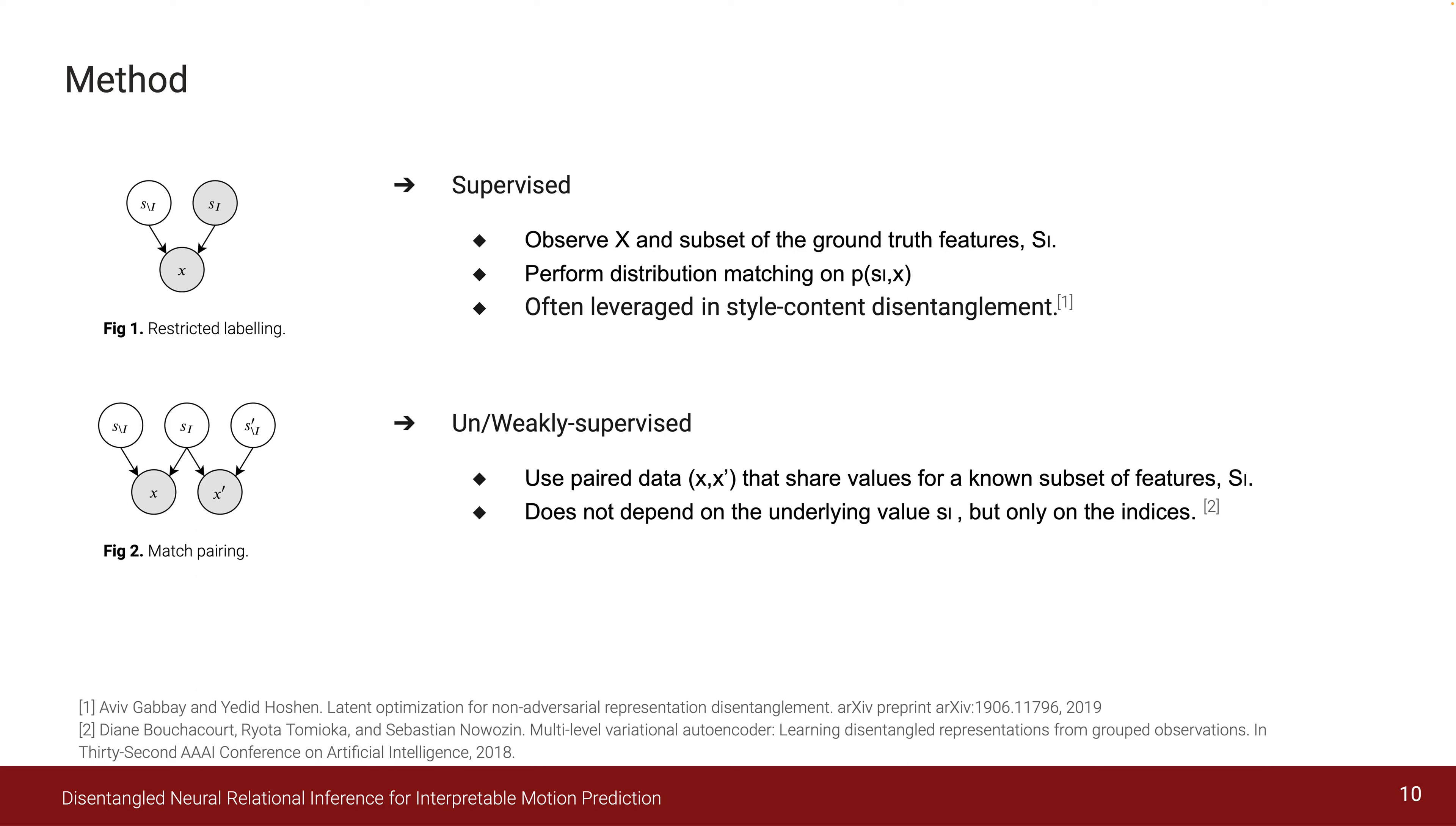It does not rely on the underlying values of S_i, but it does correlate with its indices. Although various strategies exist for its implementation, this method typically involves sampling twice from the encoder and then equating a subset of dimensions by averaging the differences.